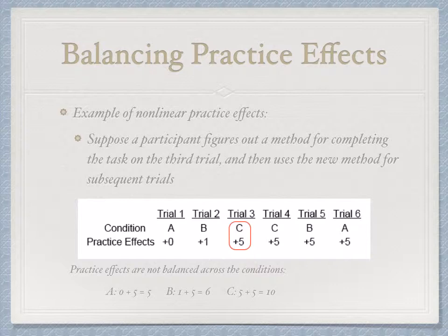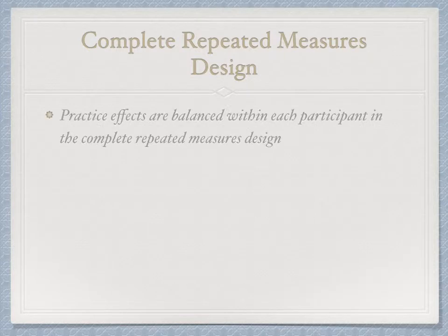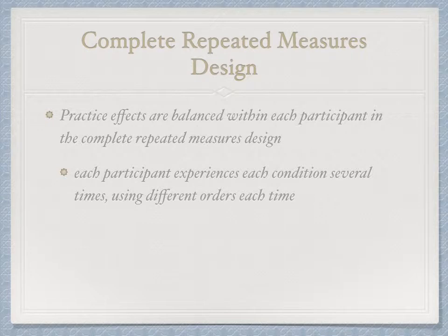There are two main ways we can balance things: we can completely balance them — as shown with the goldfish crackers example — or we can incompletely or partially balance these practice effects. For a complete repeated measures design with complete counterbalancing, practice effects are balanced within each participant. Each participant experiences each condition several times using a different order each time, allowing us to equally place conditions in different orders so that everything has every opportunity of preceding and following everything else.